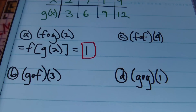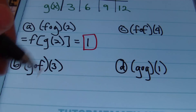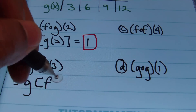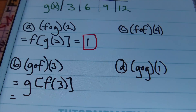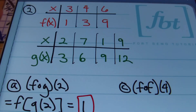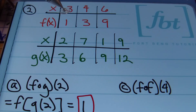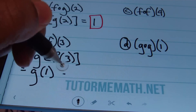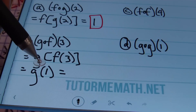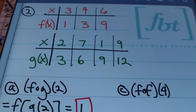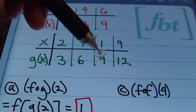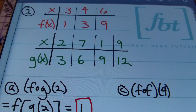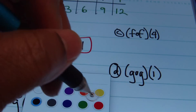In part B, we have G composite F of 3, which means G of F of 3. Finding F of 3 from our table gives a value of 1. So this becomes G of 1, because the value of F of 3 is 1. Going to the G table, where X is 1, we end up with a value of positive 9. Our answer is 9.